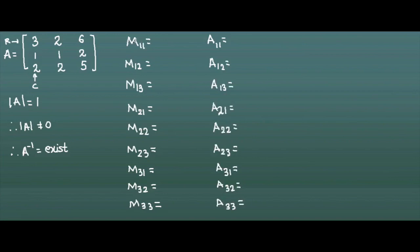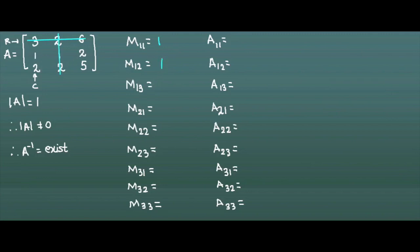To find M11, hide the first row and first column. The remaining elements are 1, 2, 2, 5, forming a 2×2 determinant. Its value is 5 minus 4 equals 1. For M12, hide the first row and second column. The remaining elements are 1, 2, 2, 5 and the value of this determinant is 5 minus 4 equals 1.